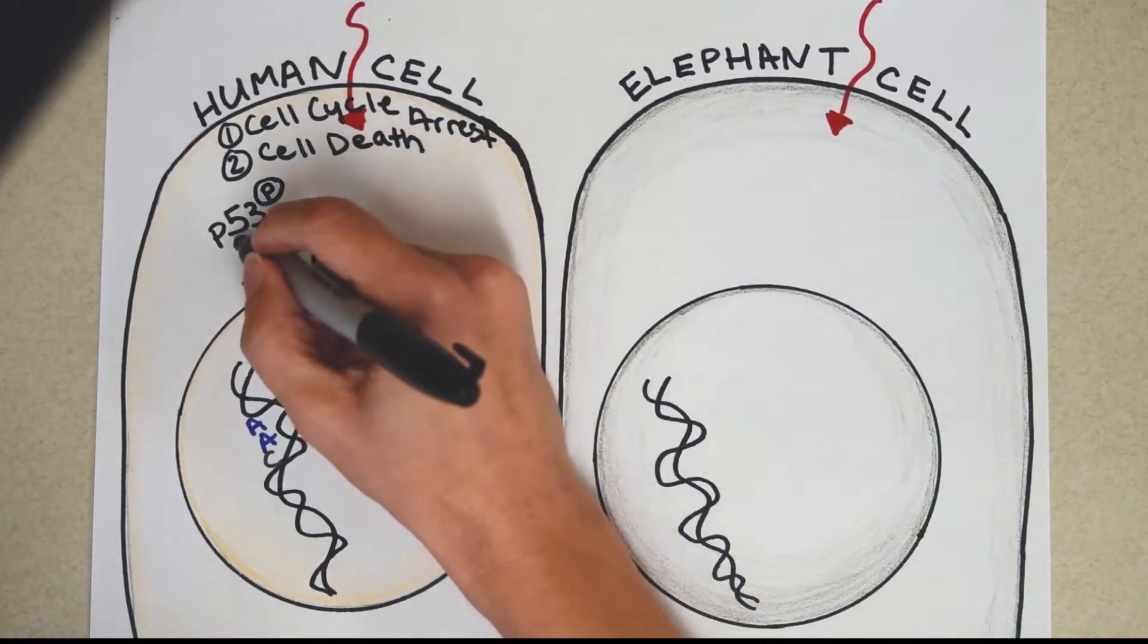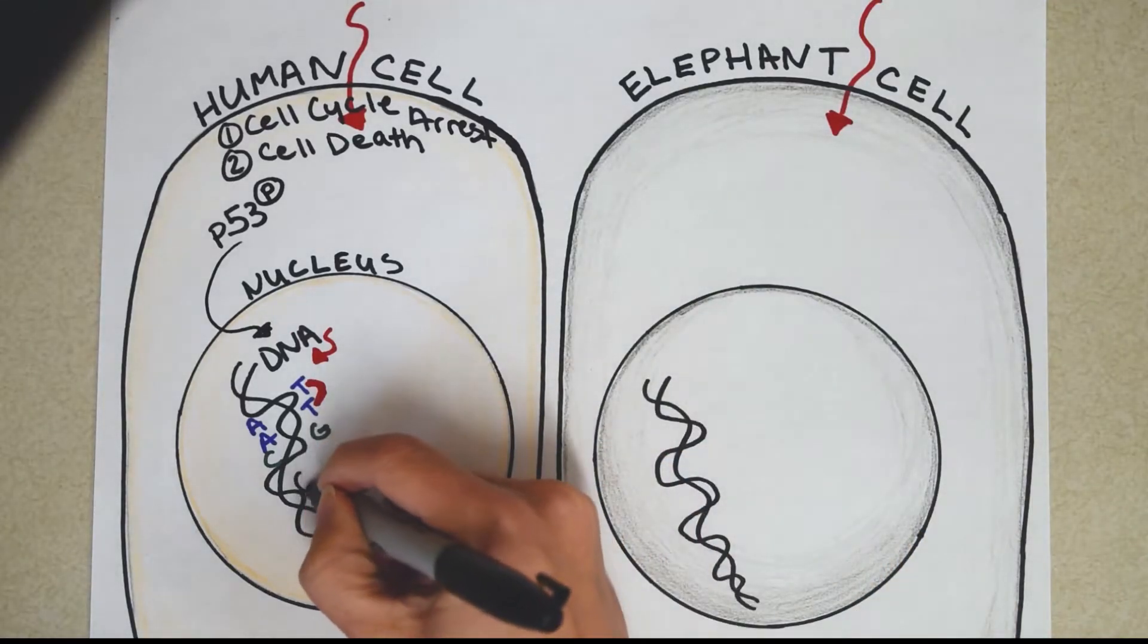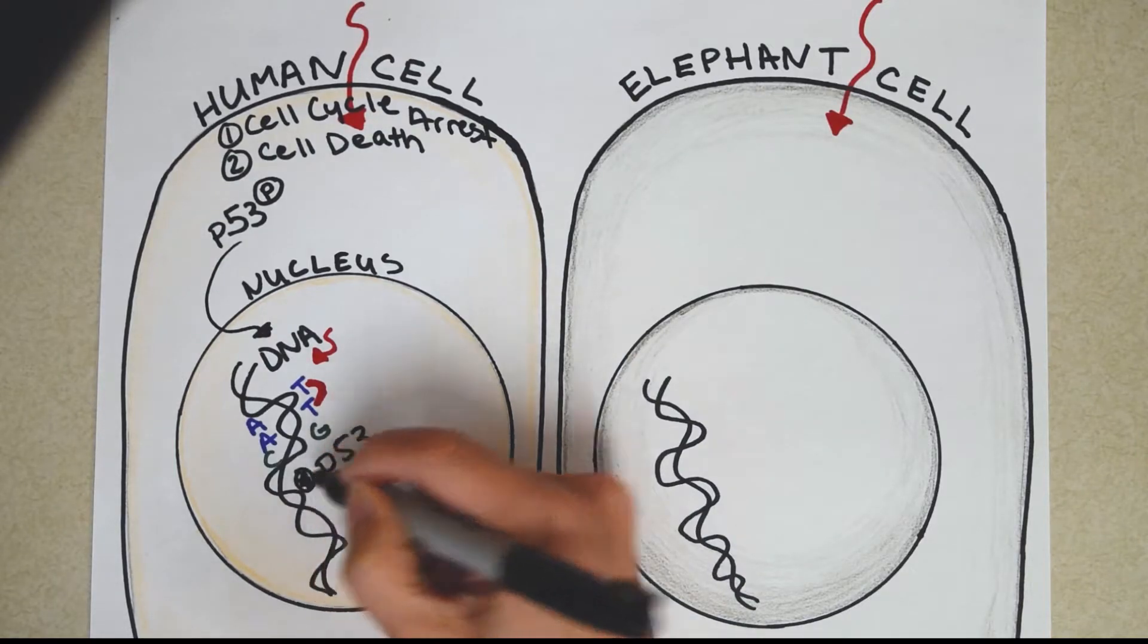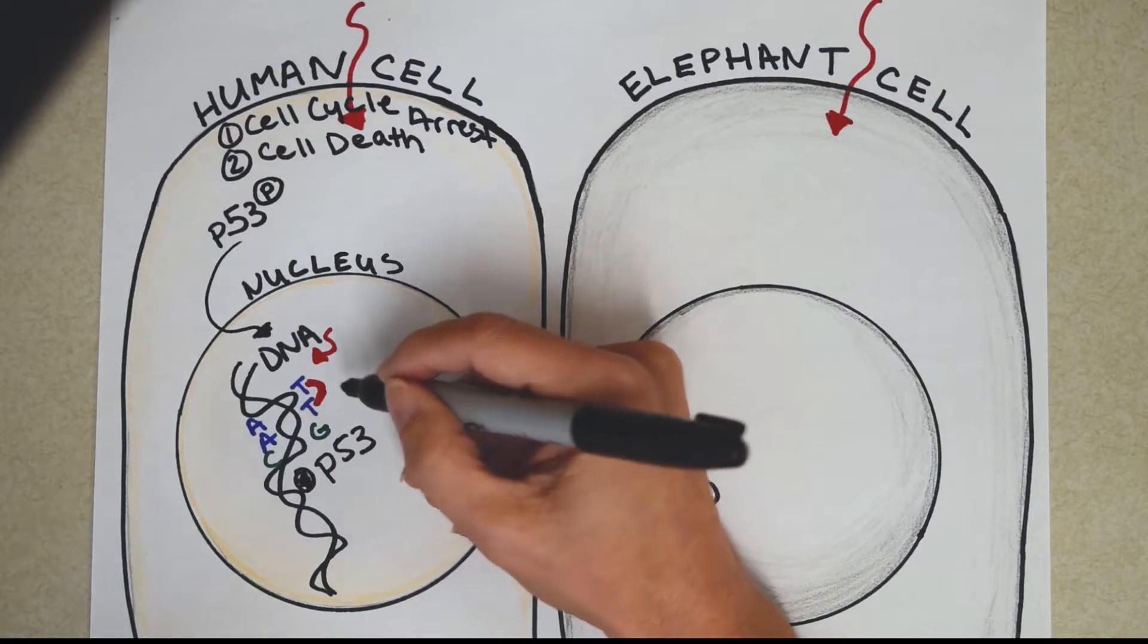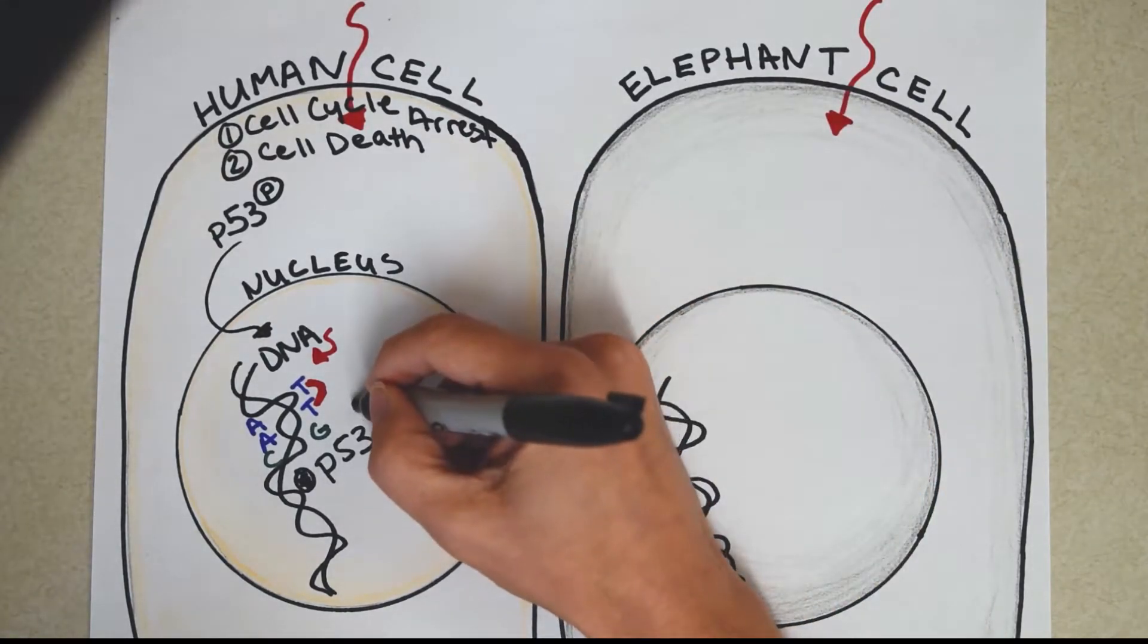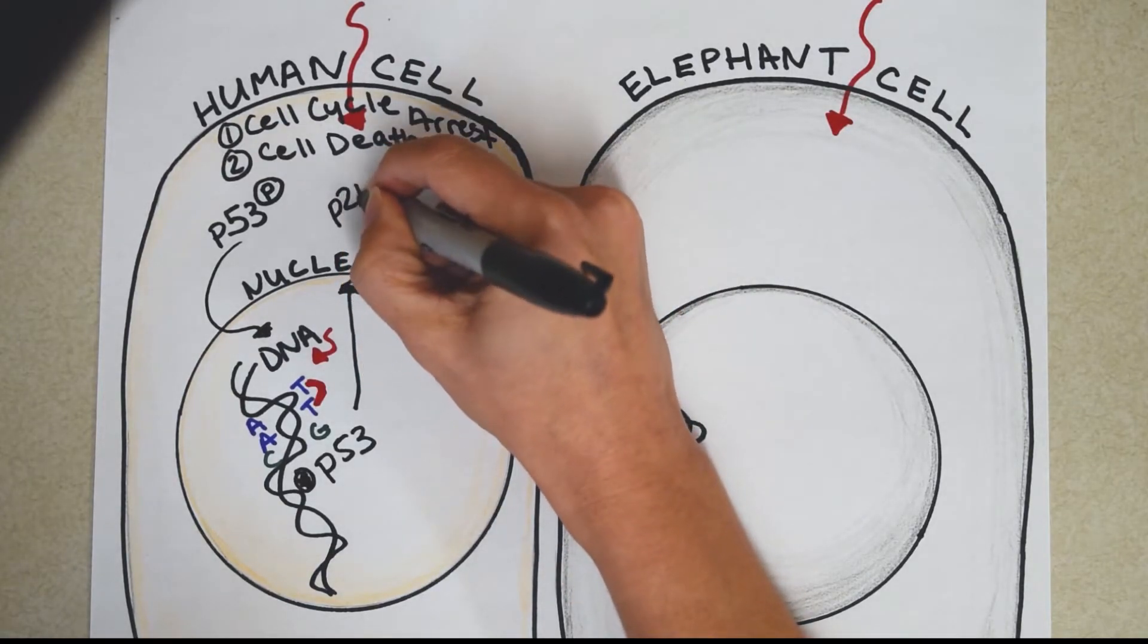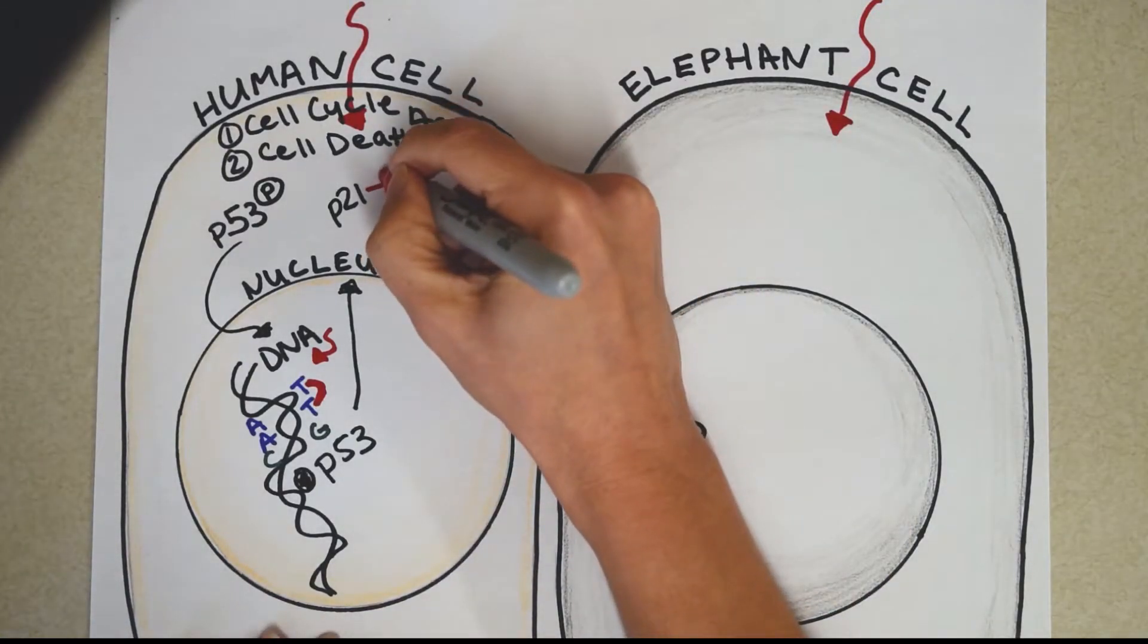Alright, so P53 is going to enter the nucleus. That's where it can interact with your DNA. Now here, I'm going to draw P53 interacting with your DNA. Now let's look at option number one. As I mentioned, P53 can cause genetic changes in your DNA. So this one's going to cause a gene called P21 to create a protein. Now P21 is going to stop your cell from dividing. Stop dividing.